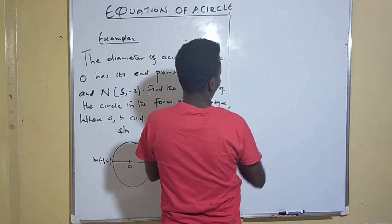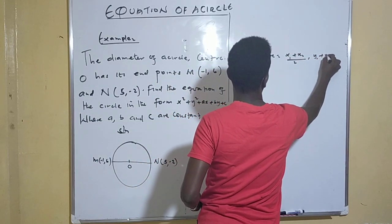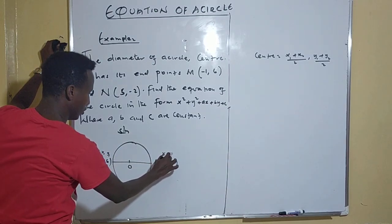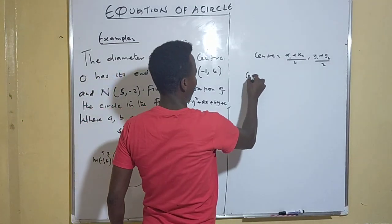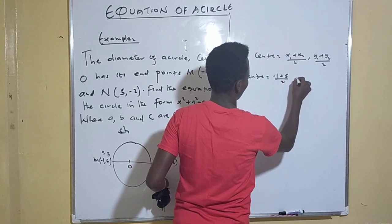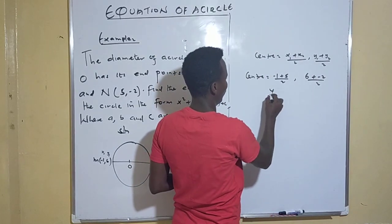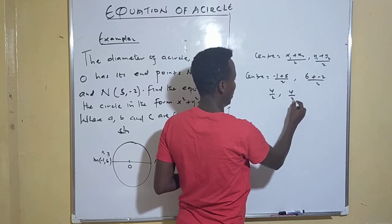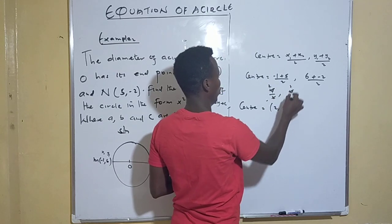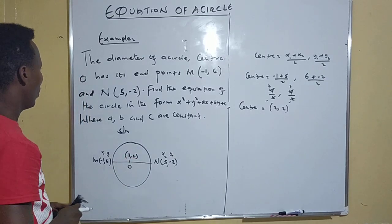Here x₁ = -1, y₁ = 6, x₂ = 5, y₂ = -2. So the center = ((-1+5)/2, (6+(-2))/2) = (4/2, 4/2) = (2, 2). So our center is (2, 2).